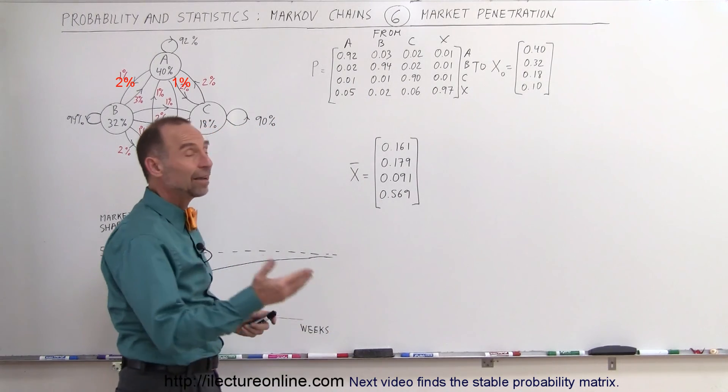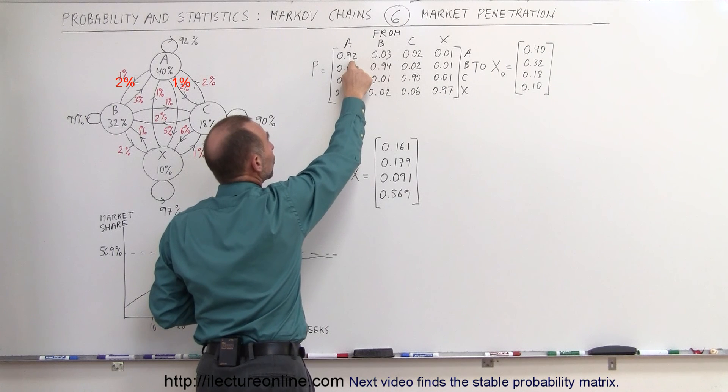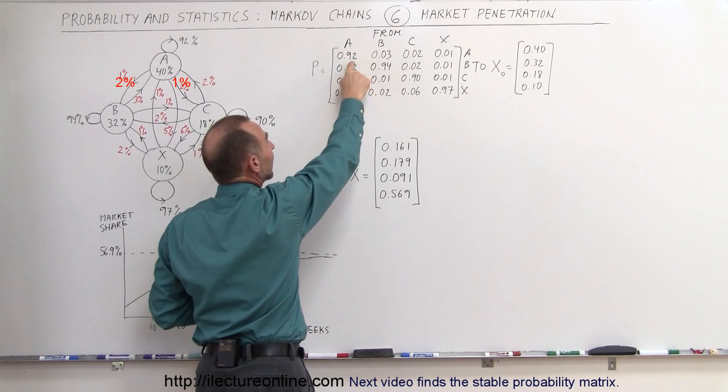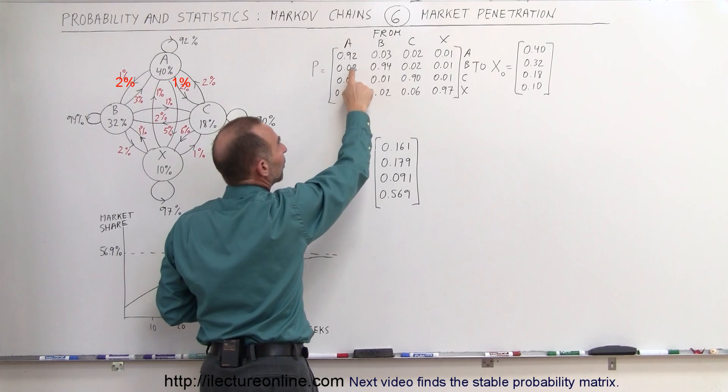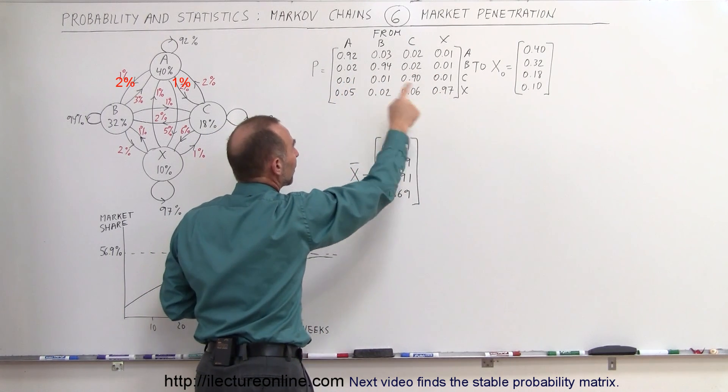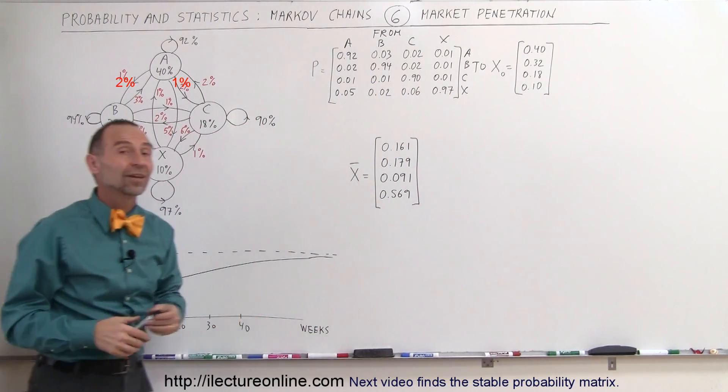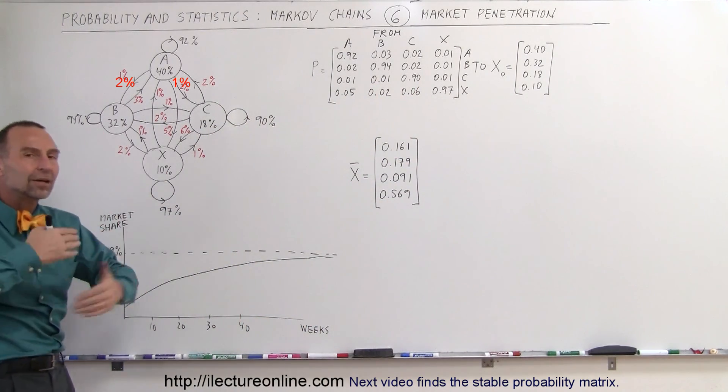In other words, of every 100 customers that buy brand A, 92 out of 100 will continue to buy brand A the next week, 2 out of 100 will buy brand B, 1 out of 100 will buy brand C, and 5 out of 100 will buy brand X the next week, and let's say this pattern continues.